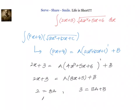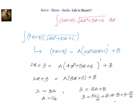From the first equation, we know a = 1/4, and substituting that in the second, we have 3 = 5×(1/4) + b, so b = 3 − 5/4 = 7/4. So we got the value of a as 1/4 and the value of b as 7/4, and the derivative of (4x² + 5x + 6) is 8x + 5.